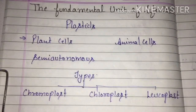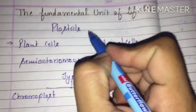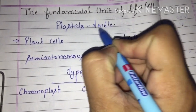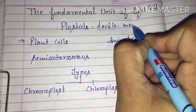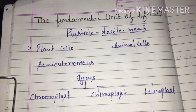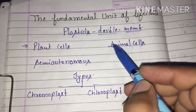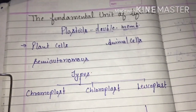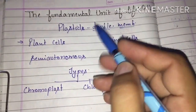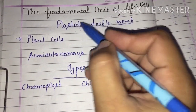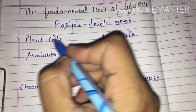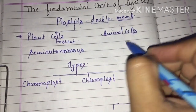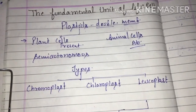Plastids are double membrane bound organelles, like mitochondria. We studied that mitochondria is a double membrane bound structure, and plastids are also double membrane bound structures. If we talk about the presence of plastids, these are mainly present in plant cells and absent in animal cells.